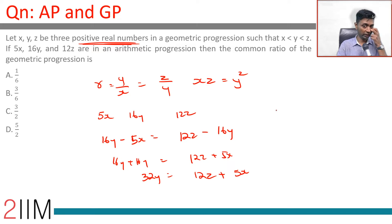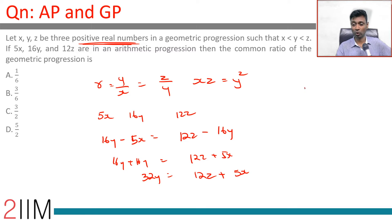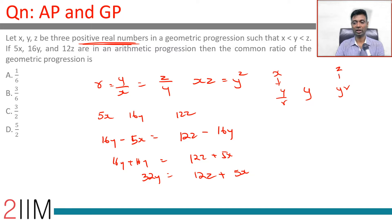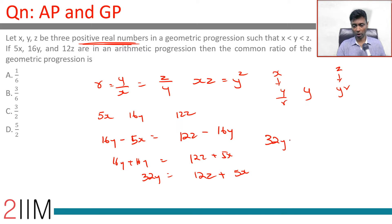Now we need to find the common ratio. I am going to assume the common ratio to be r. Instead of assuming the numbers as x, xr, and xr squared, I am going to anchor around y. So the first term would be y by r, and the third term would be yr. Thus x is y by r and z is yr. We can substitute: 32y equals 12yr plus 5y by r.